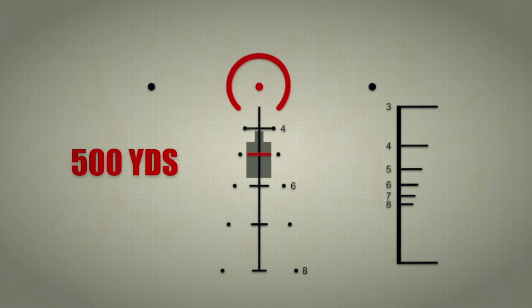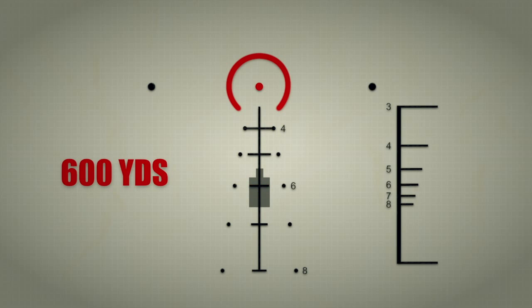For 500 yards range and aim using the second crosshair. For 600 yards range and aim on the third crosshair with the number six next to it.